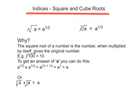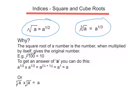In this lesson we're looking at indices and using them to represent square and cube roots. At the top of the page you'll notice there are two rules written. The first one says that the square root of a is equal to a to the half power. The second one says the cube root of a is equal to a to the third power. So in indices we can use a to the half to represent square root and a to the third to represent cube root.